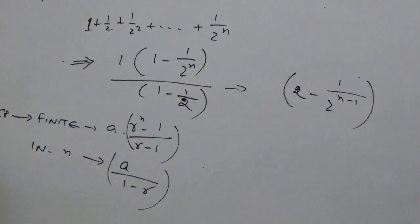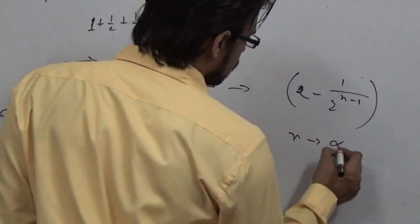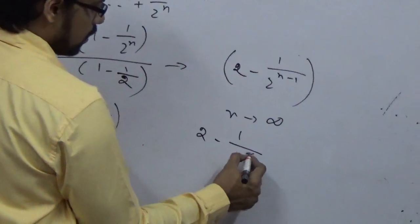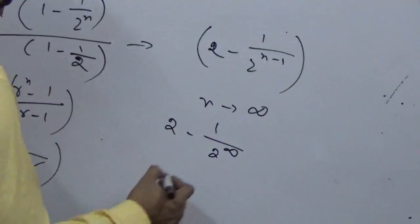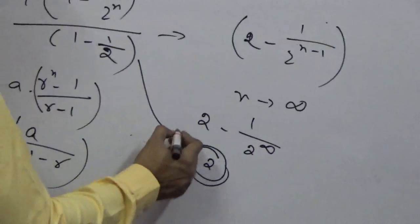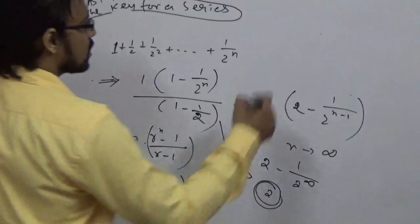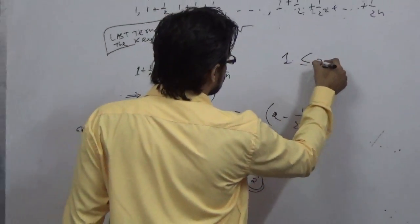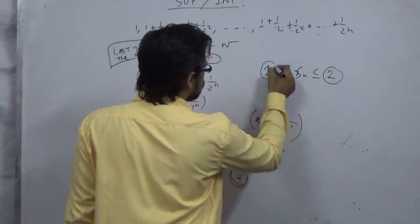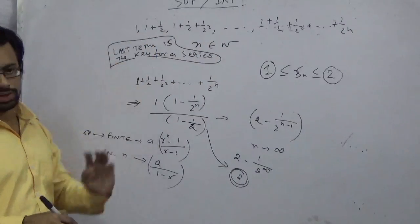Now, what happens if you put n tends to infinity? That gives 2 minus 1 by 2 to the power infinity. That part becomes 0, so it is 2. So the entire value approaches 2 when n tends to infinity, and the lowest value is 1. So the entire structure lies between 1 less than or equal to S_n less than or equal to 2. Now you know the supremum value.